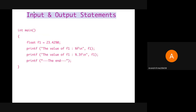Here you can see a piece of code. Many times we don't want to just print the value of a variable, but we want to print the value embedded in a statement. For example, here we want to print 'the value of f1 is' and then the actual value. So we can write the statement directly in the format string and in place of %f or %d, the value gets substituted. Here you can see the output. The first printf prints 'the value of f1 is 23.4290'. The second printf prints 'the value of f1 is 23.429', because here we have mentioned the precision as three, so it prints correct to three decimal places.